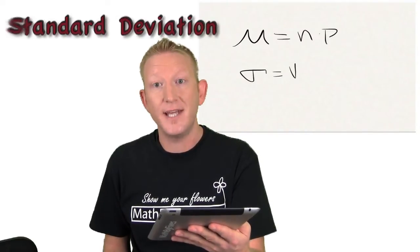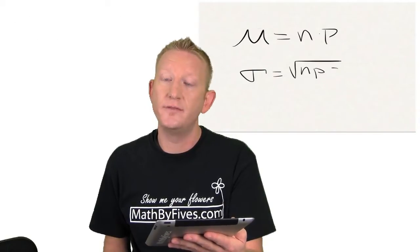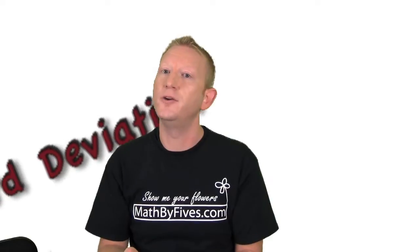Next, the standard deviation of a binomial distribution is the square root of npq. So it's the square root of the number of trials times the probability of success times the probability of failure. And that's going to give you your standard deviation for your binomial distribution.